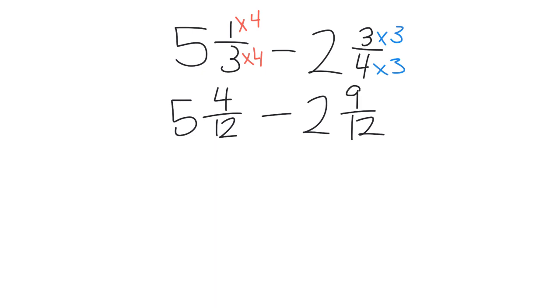So at this point we can see that we're going to have to do something because we're being asked to subtract 9 twelfths, and we only have 4 twelfths over here. So right off the bat we see that something is amiss, right?